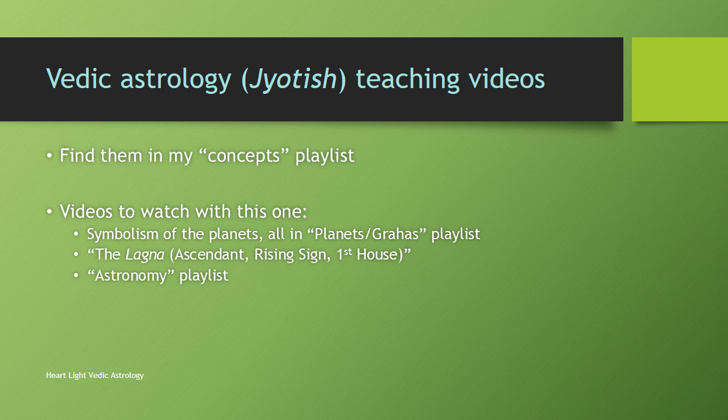The lagna — ascendant, rising sign, first house — that's important because I'm going to talk about the velocity and the lagna. Also the astronomy playlist. I don't have a lot of videos there, but the concept of planet velocities is essentially astronomy, so the essential astronomy an astrologer needs is all in that playlist.